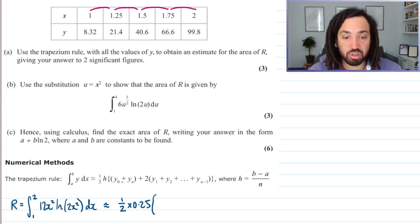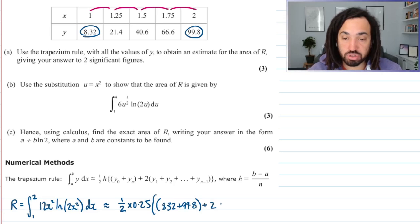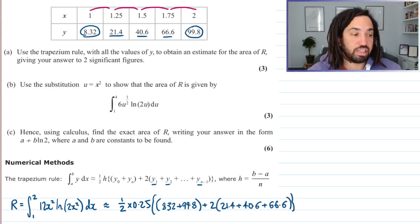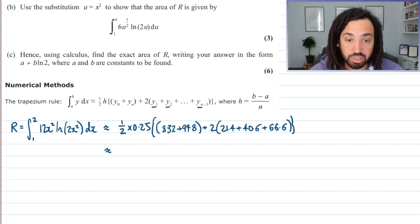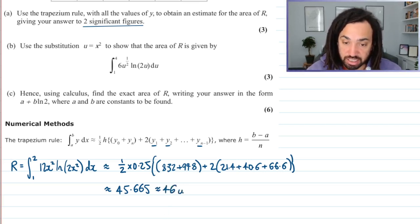Then we've got y₀ plus yₙ — that is the first y value and the last y value, so we need to add those two together. Then we're going to add two lots of all of the other y values in the middle: 21.4 plus 40.6 plus 66.6. We close that up and we have our estimate. We get a value of 45.665, and the question did say to two significant figures, so we round that to 46 units squared.